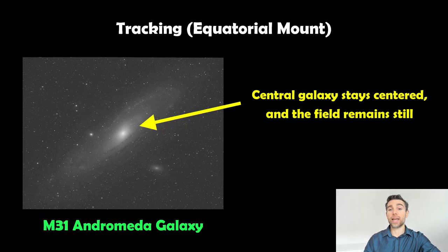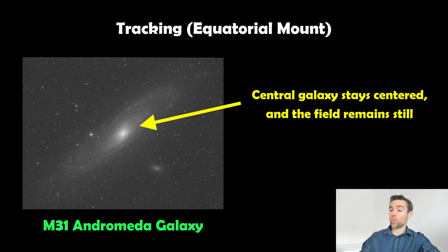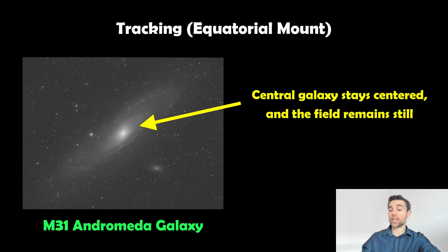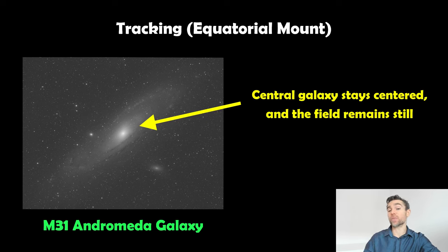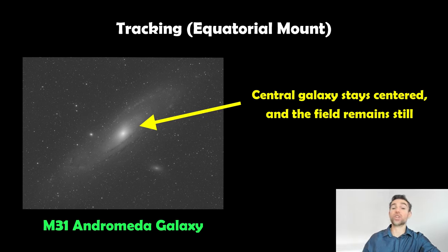The benefit of using an equatorial mount is that if we track an object — like the Andromeda galaxy here — we keep it in the centre of our picture or field of view for a long period of time. With an altitude-azimuth mount you have to move two axes simultaneously and you get field rotation. But with an equatorial mount, because you're only moving the right ascension to compensate for the Earth's movement, we don't get any field rotation. We get a nice static image as the Earth rotates, and we can track it for hours with a good mount and tracking software.